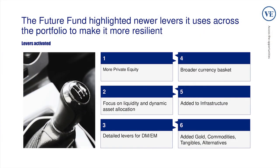So with those areas, these are the levers that were activated. First was allocating more to private equity. Second was focusing on liquidity and dynamic asset allocation — ETFs allow for those things because you can easily move between asset classes. Having detailed levers for developed markets, emerging markets, a broader currency basket, adding to infrastructure — we write about that all the time given the appeal of infrastructure as an asset class — and then adding gold, commodities, tangibles, and alternatives into the mix as well.